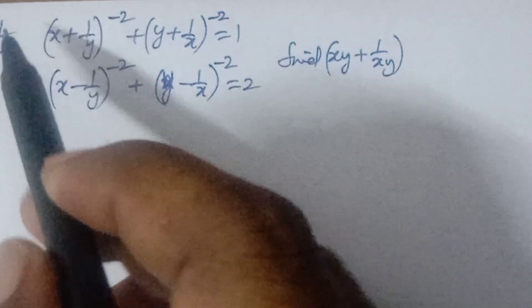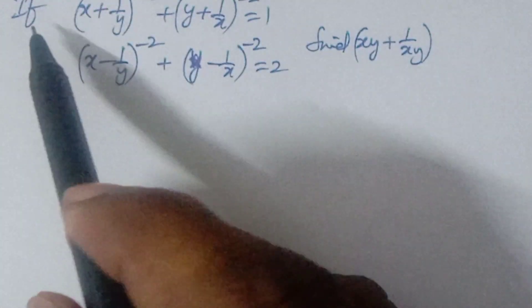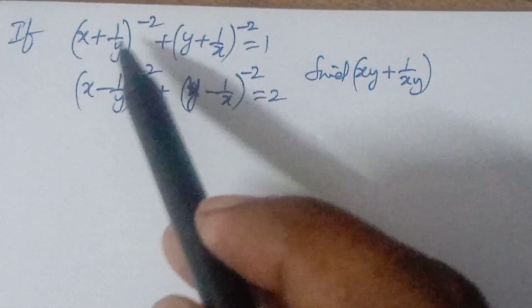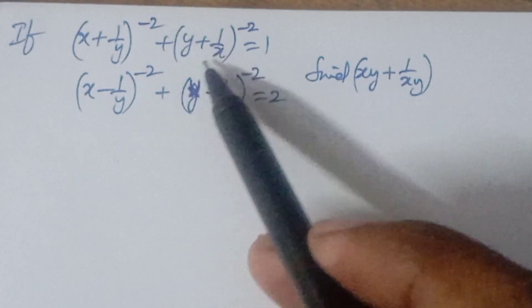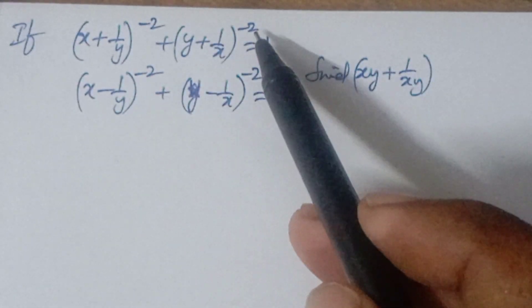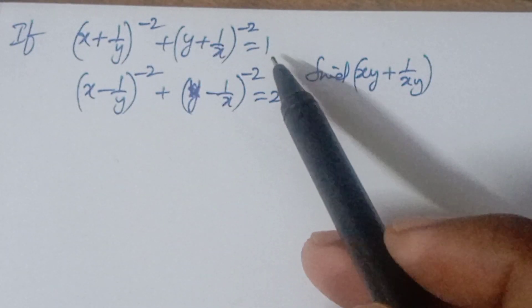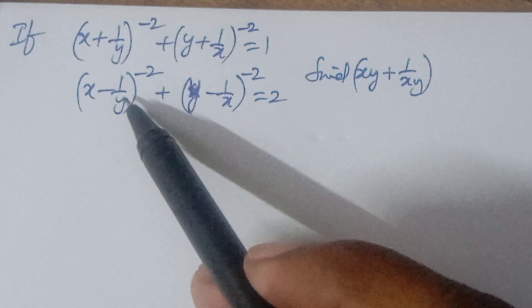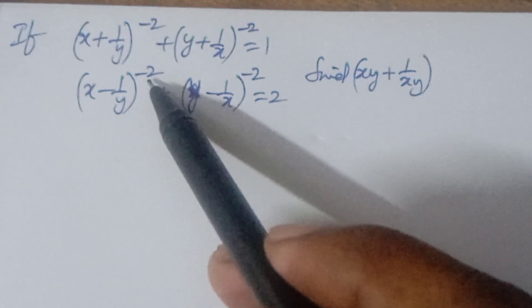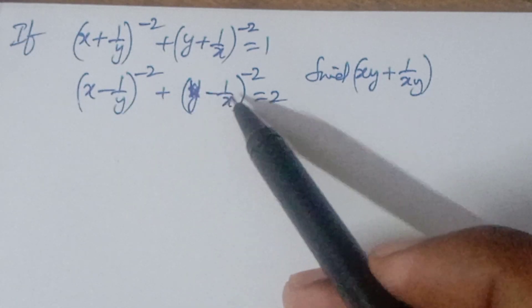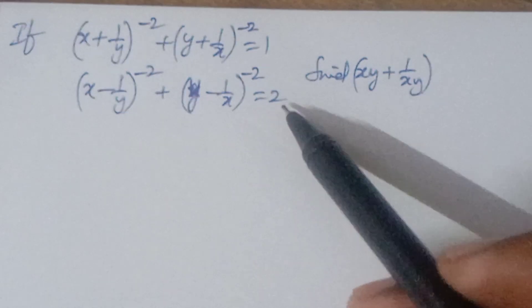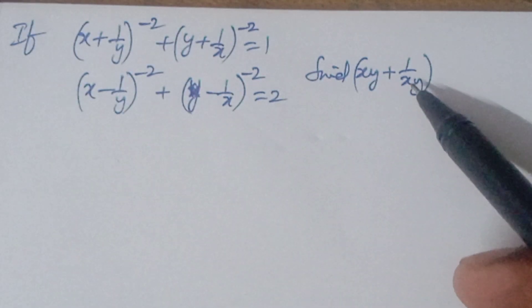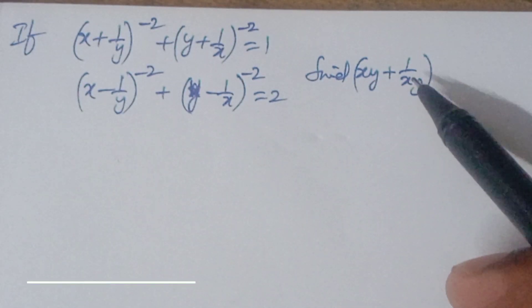Welcome to Ion CG Max. The problem is given: (x + 1/y)^(-2) + (y + 1/x)^(-2) = 1, and (x - 1/y)^(-2) + (y - 1/x)^(-2) = 2. Find the value of xy + 1/(xy).